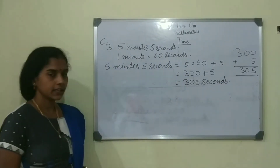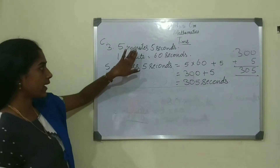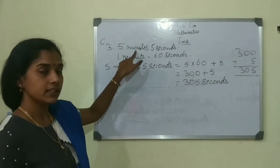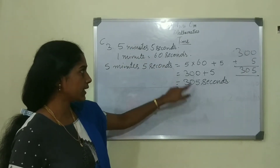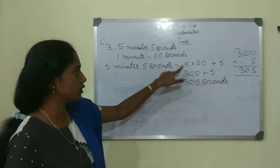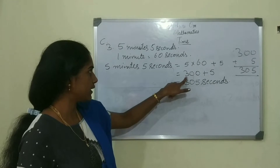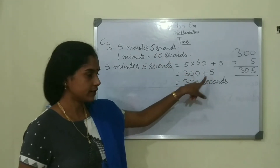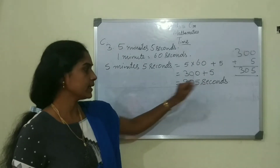In the last two questions they gave only minutes. But here they gave minutes and seconds. So first we convert 5 minutes into seconds: 5 into 60 is 300, then add 5 seconds, so the answer is 305 seconds.